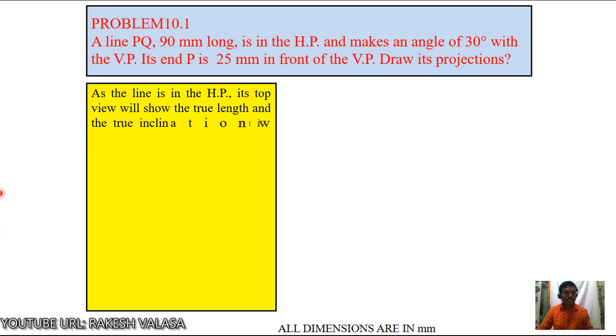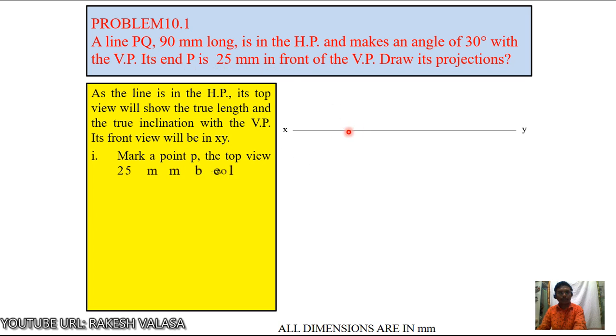Here the line PQ in the HP, its top view will show the true length and true inclination with VP. First, you have to draw one XY line. This line end P in the HP and 25mm in front of VP. Just you can mark one point on XY.